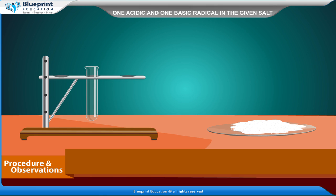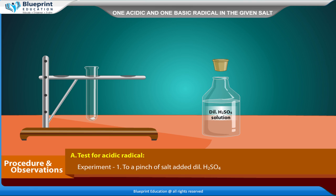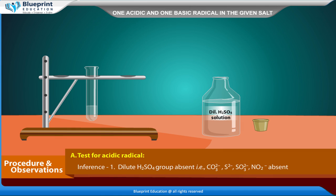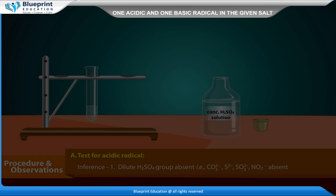Procedure and observations. Test for acidic radical. Experiment: to a pinch of salt, add dilute H₂SO₄. Observation: no observation. Inference: dilute H₂SO₄ group absent, i.e., CO₃²⁻, S²⁻, SO₃²⁻, NO₂⁻ are absent.